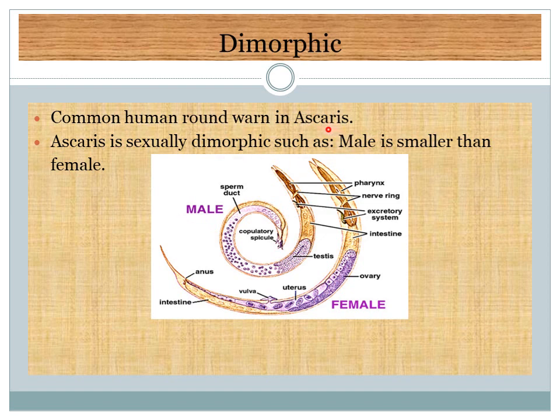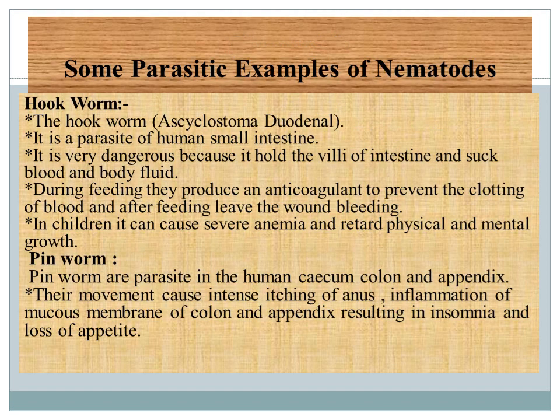Parasitic examples of Nematodes — Hookworm: the hookworm is a parasite of the human small intestine. It is very dangerous because it holds onto the villi of the intestine, which help in food absorption, and sucks blood and body fluids. During feeding it produces anticoagulants to prevent clotting of blood, and after feeding leaves the wound bleeding. In children it causes severe anemia and retards physical and mental growth.